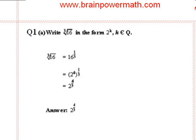16 is the same as 2 to the power of 4. Writing this in as shown, we use another indices rule to multiply the two powers together. We get 2 to the power of 4 over 3.